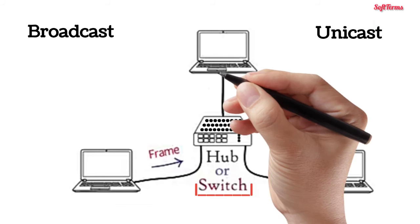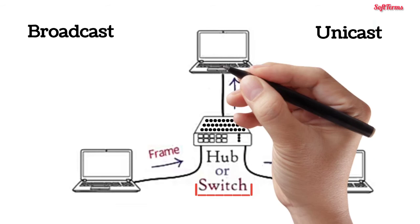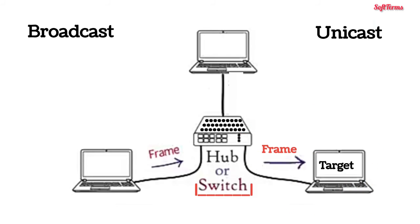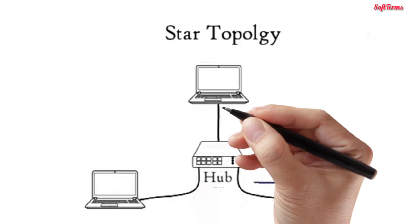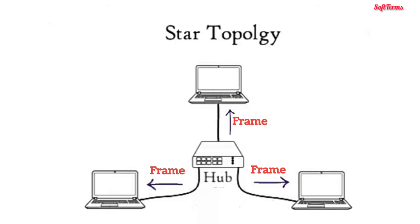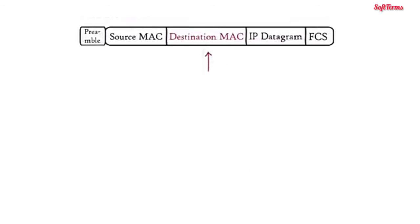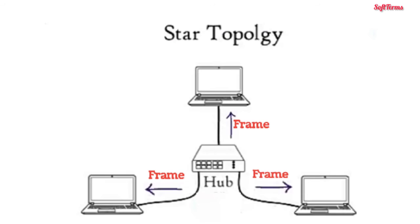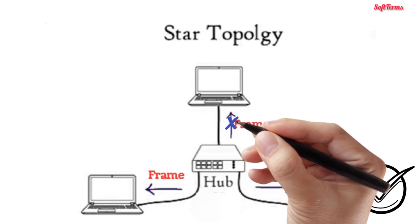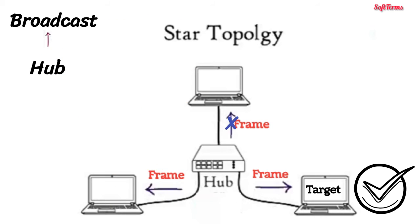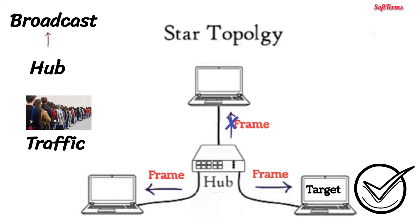Broadcast means transmission of data to all connected devices, while unicast means transmission of data to the target device only. If the central device is a hub, it broadcasts the received frame to all connected computers — that is, a hub is a multi-port repeater. The frame has a destination MAC address which is unique to every computer in the network, so only the target computer accepts the frame and others discard it. Since a hub broadcasts the received frame, it increases unnecessary data traffic in the network.